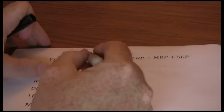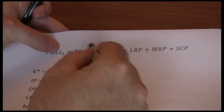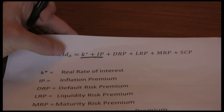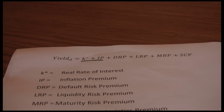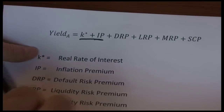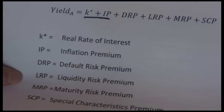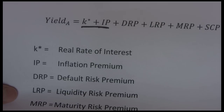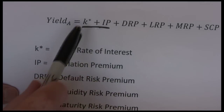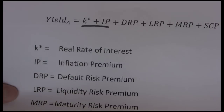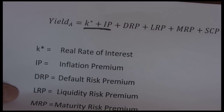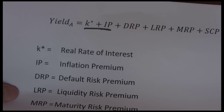These first two — the real rate and the inflation premium — are sometimes combined and referred to as the risk-free rate of interest, because we haven't introduced any risk factors yet. We're just talking about how much an investor wants to maintain their purchasing power and get a little bonus to encourage them to save rather than spend. Next we're going to get into risk factors, or risk premiums.